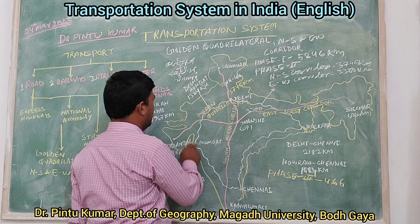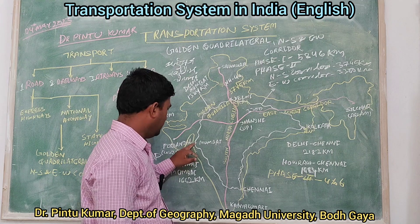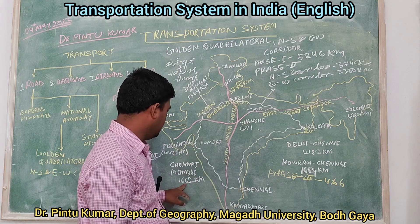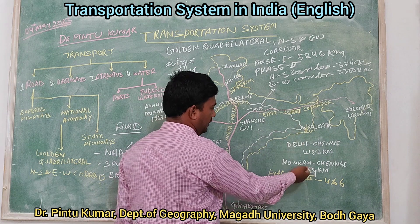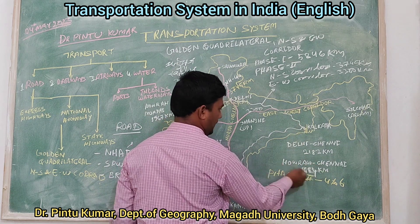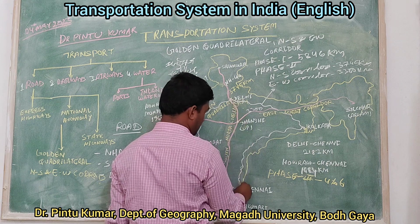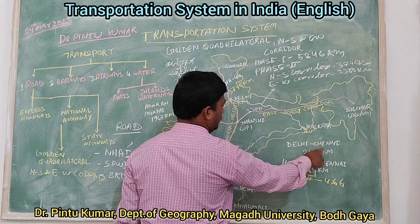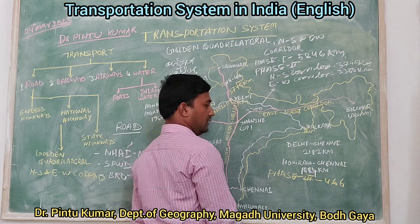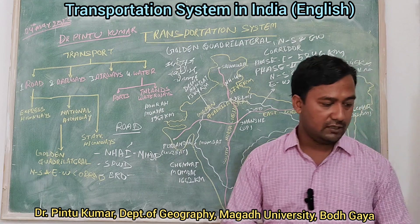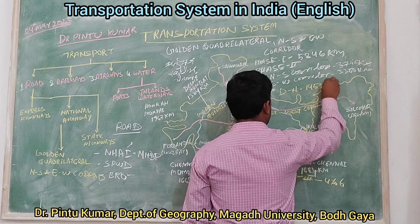The first phase runs from Delhi to Mumbai, a total distance of 1,384 kilometers. The second point is Mumbai to Chennai, which is around 1,662 kilometers. The third is Chennai to Howrah, around 1,684 kilometers. Delhi to Chennai is 2,182 kilometers, and Delhi to Howrah is around 1,453 kilometers.